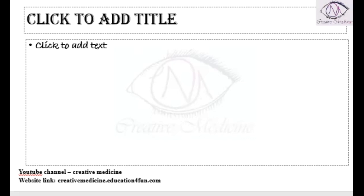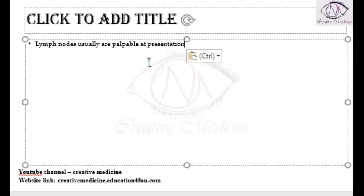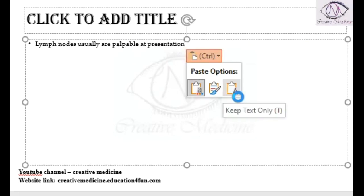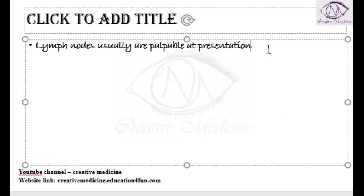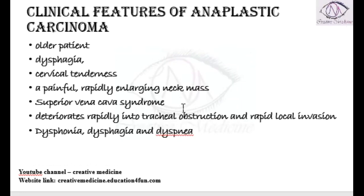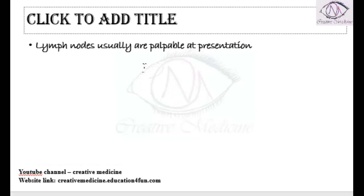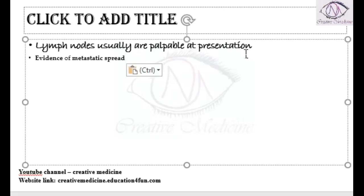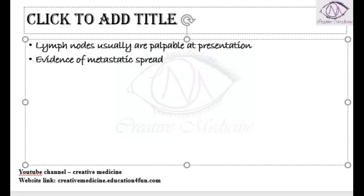In anaplastic carcinoma, lymph nodes are usually palpable at the time of presentation itself. Because of the rapidly enlarging neck mass, rapid metastasis also occurs, so evidence of metastasis and lymph node metastasis is commonly present at the time of presentation.